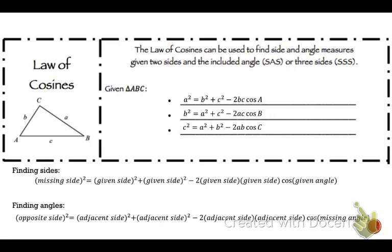Or to find angles, it's the opposite side of the angle squared equals the adjacent side squared plus the adjacent side minus two times the adjacent sides times the cosine of the missing angle. That will all make sense once we get into actually doing these.